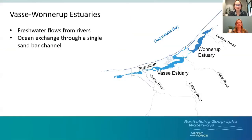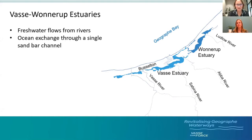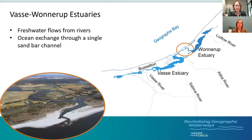The Vasse Wonnerup estuaries receive fresh water flows from rivers — many of which drain either urban or agricultural land — so they tend to become nutrient enriched. These rivers deliver high levels of nutrients to the estuaries. The skinny channels at the end of each estuary join together towards the coast and the water flows out through a single ocean entrance that breaks through a sandbar at Wannerup Inlet. So these two estuaries are exposed to the ocean through this relatively small channel through the sandbar.